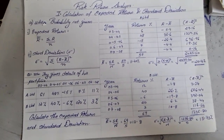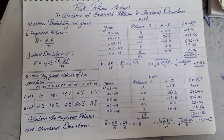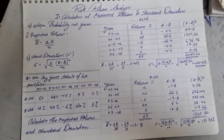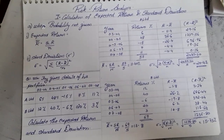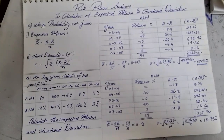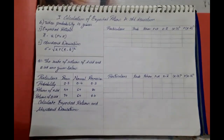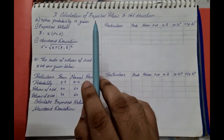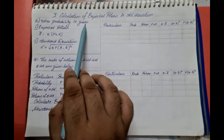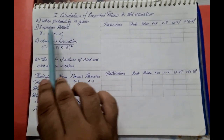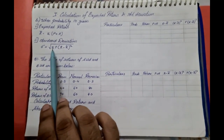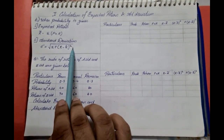With this we were able to solve sums based on expected return and standard deviation when probability was not given. This was the very first type. Now we will be solving sums where we have probability. The second method formulas are: expected return r̄ = Σ(p × r), and standard deviation = square root of Σp(r − r̄)².